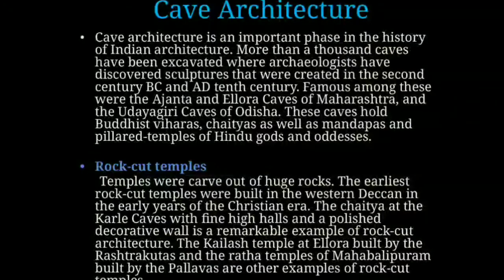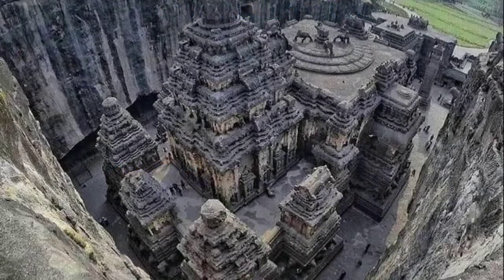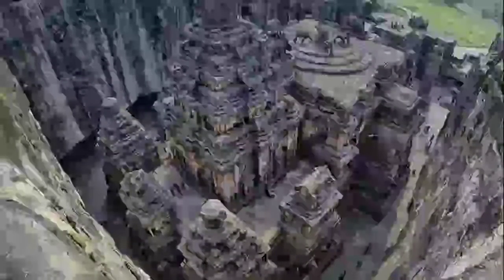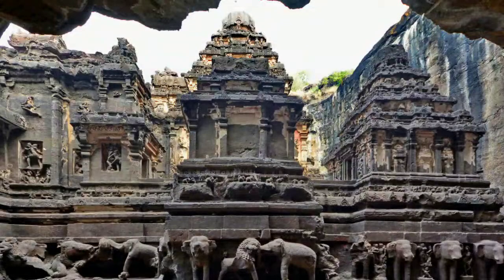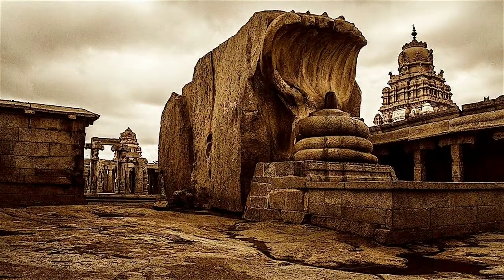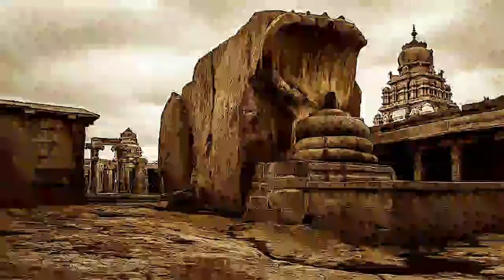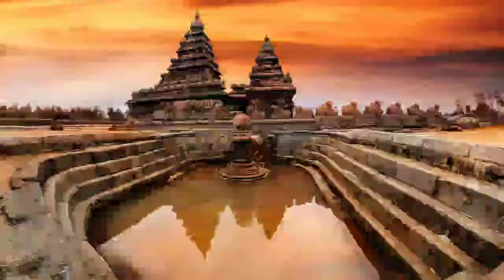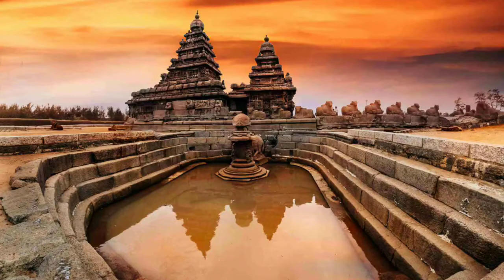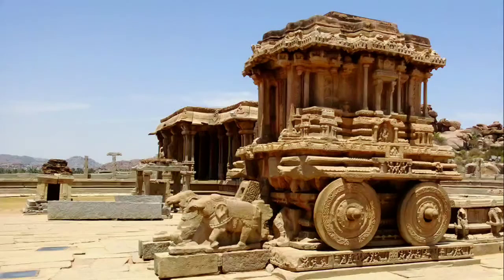Temples were carved out of huge rocks. The earliest rock-cut temples were built in the western Deccan in the early years of the Christian era. The chaitya at the Karla caves, with its fine high halls and polished decorative wall, is a remarkable example of rock-cut architecture. The Kailash temple at Ellora, built by the Rashtrakutas, and the Rathas of Mahabalipuram, built by the Pallavas, are other notable examples of rock-cut temples.